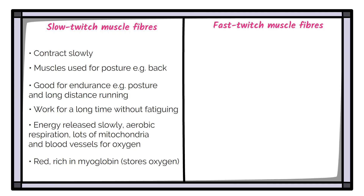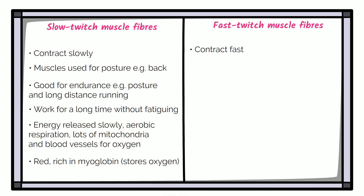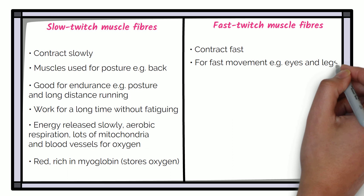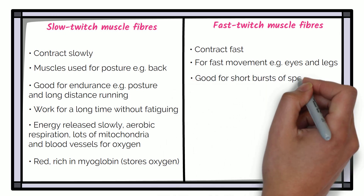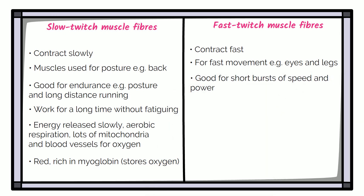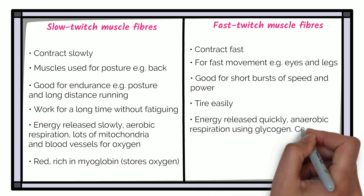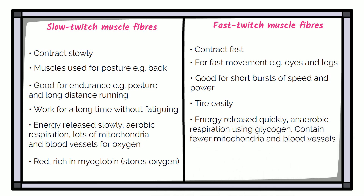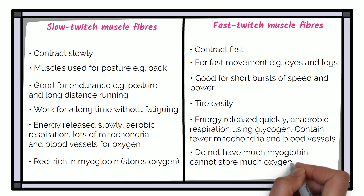Fast twitch muscle fibres contract fast. They are found in muscles for fast movement, for example in the eyes and legs. They are good for short bursts of speed and power. They tire easily. Energy is released quickly under anaerobic respiration using glycogen. They contain fewer mitochondria and blood vessels, do not have much myoglobin, cannot store much oxygen, and they appear white.